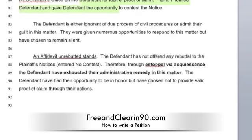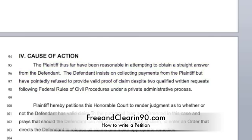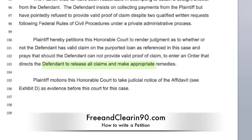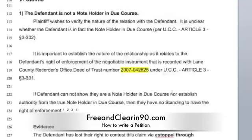The course of action is: thus far I've been very reasonable in attempting to get straight answers from the defendant, and yet the defendant still insists on collecting money from me and yet pointedly refused to provide valid proof of claim, despite me following proper rules and civil procedures. So I'm petitioning this court to render a judgment as to whether or not they have valid proof of claim, and if they don't, to release all claims and make appropriate remedies. I also wanted to take judicial notice of my affidavit. An affidavit stands true unless it's rebutted, so my affidavit presented this way becomes evidence as part of this complaint or petition.